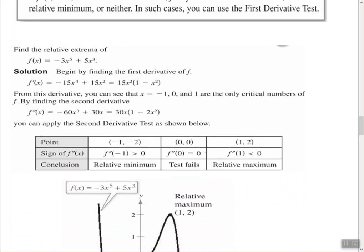If the second derivative equals zero, the test fails and you would go back and do your first derivative test.